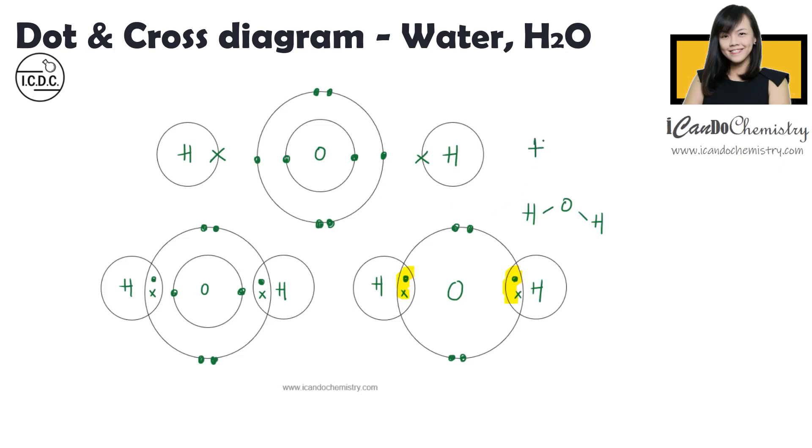At O levels, if you draw something like this, the straight line, you shouldn't be penalized. Because what is important is whether you know how many bonds are shared between the atoms rather than the shape of the molecule.